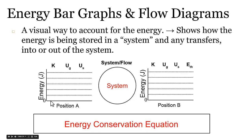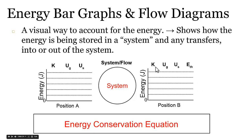There's a bar graph on the left which shows the energy that the object or system has at some position or time. The circle in the middle represents our system, where we show any energy flow in or out. The bar graph on the right shows the energy present or stored within the system after some kind of event. From this, we write our energy conservation equation. Let's look at some examples to see how this works.